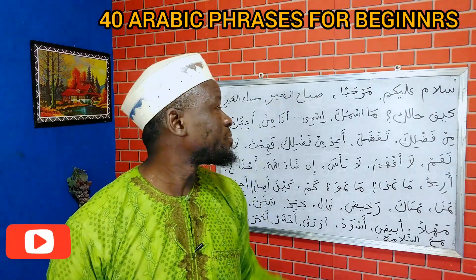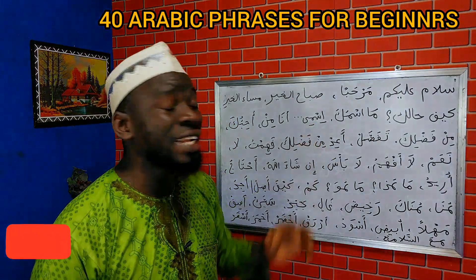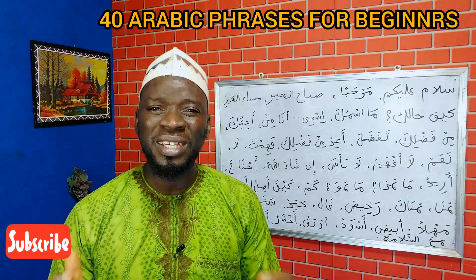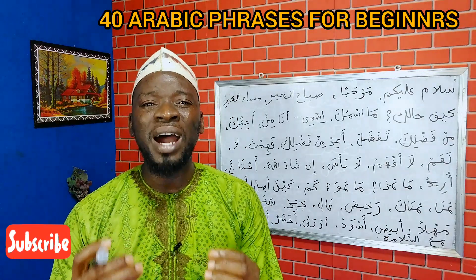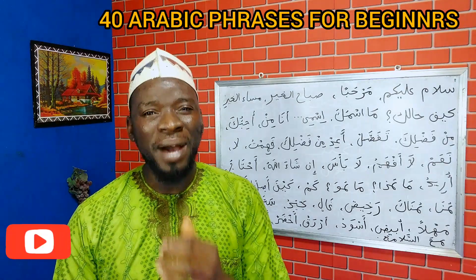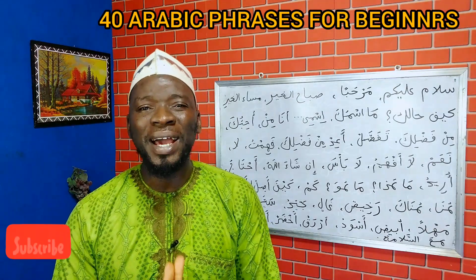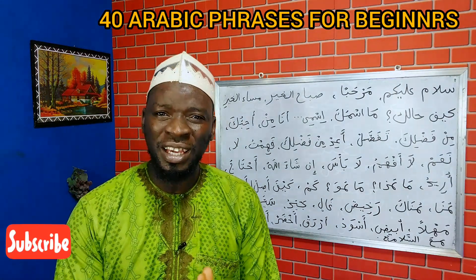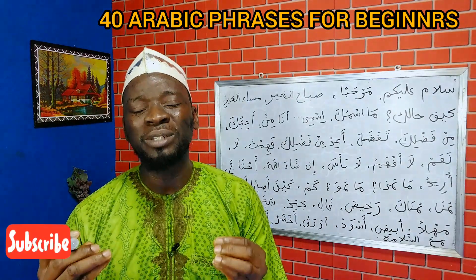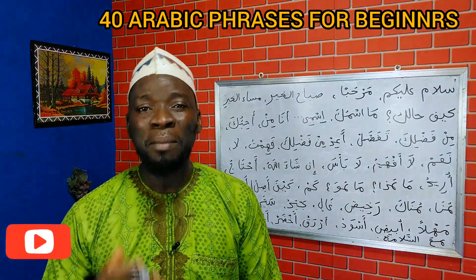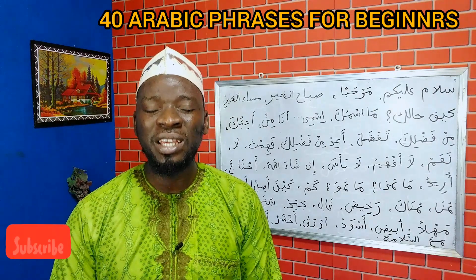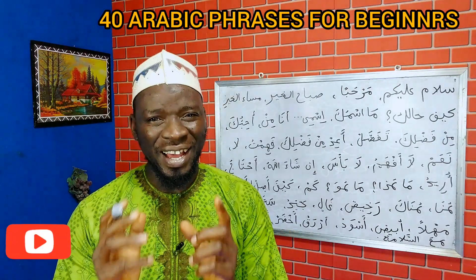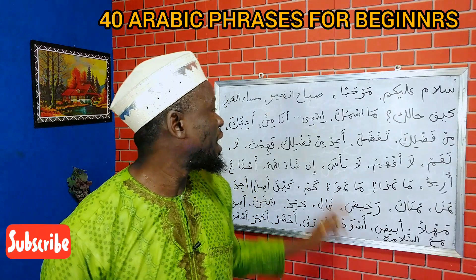Barakallahu fiku. To answer, you say ismi — my name is. For example: ismi Abdullah — my name is Abdullah. Ismi Siraj Abdul Fatah — my name is Siraj Abdul Fatah. That is how you use masmuk to ask and ismi to answer.